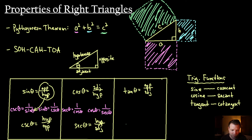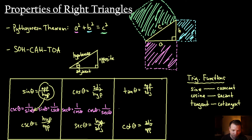Tangent is paired with cotangent. So if you put these all together, the cotangent of theta would be these flipped — that would be the adjacent over the opposite side. We could also write this as the cotangent of theta is equal to 1 over tangent of theta. Or you could say that the tangent of theta is equal to 1 over cotangent of theta.